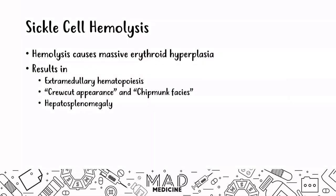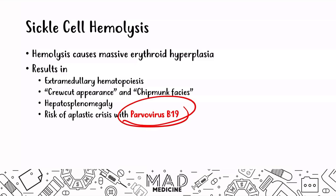You will also see hepatosplenomegaly and a risk of aplastic crisis with parvovirus B19. This is very high yield for Step 1 — parvovirus B19 in a sickle cell patient can lead to an aplastic crisis. Do not forget that.